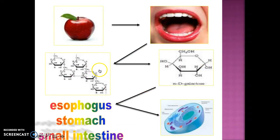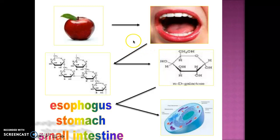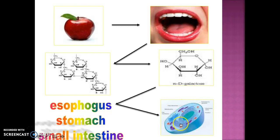We have talked about digestion already. Whenever we ingest foods and biomolecules, they go through the mouth. We break them down chemically and mechanically, going from polymers into monomer forms, which are simpler. Then when it gets through the small intestine, through the villi, it goes into the bloodstream and finally reaches our cells. We are now talking about how these monomers — these simple molecules — go through the cell membrane into the different parts of the cell.